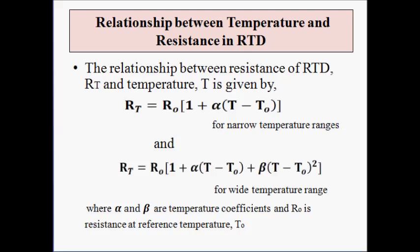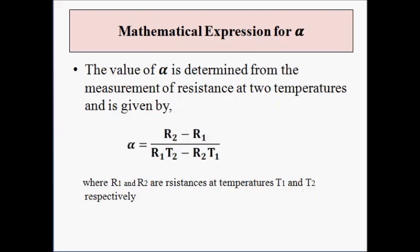The temperature coefficient of resistance α is determined by measuring the resistance of the RTD at two temperatures T1 and T2, where T2 is higher than T1. It is given by: α = (R2 − R1) / (R1·T2 − R2·T1). Here, R1 is the resistance of the RTD at temperature T1, and R2 is the resistance at temperature T2. By this formula, the positive temperature coefficient alpha is calculated.